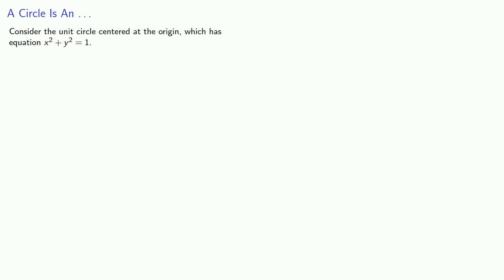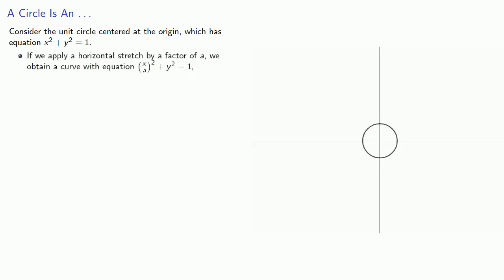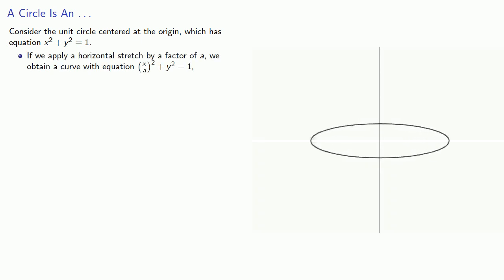Let's consider the unit circle centered at the origin, which has equation x squared plus y squared equals 1. Now, if we apply a horizontal stretch by a factor of a, we obtain a curve with equation x divided by a, squared, plus y squared, equals 1.